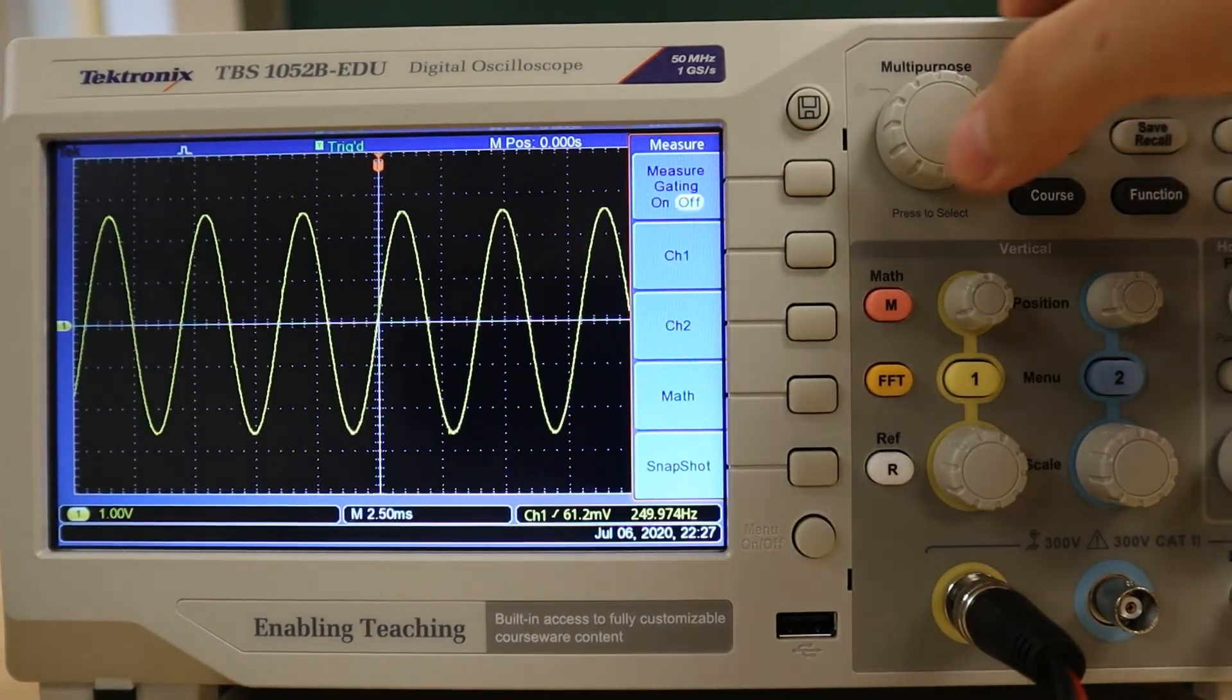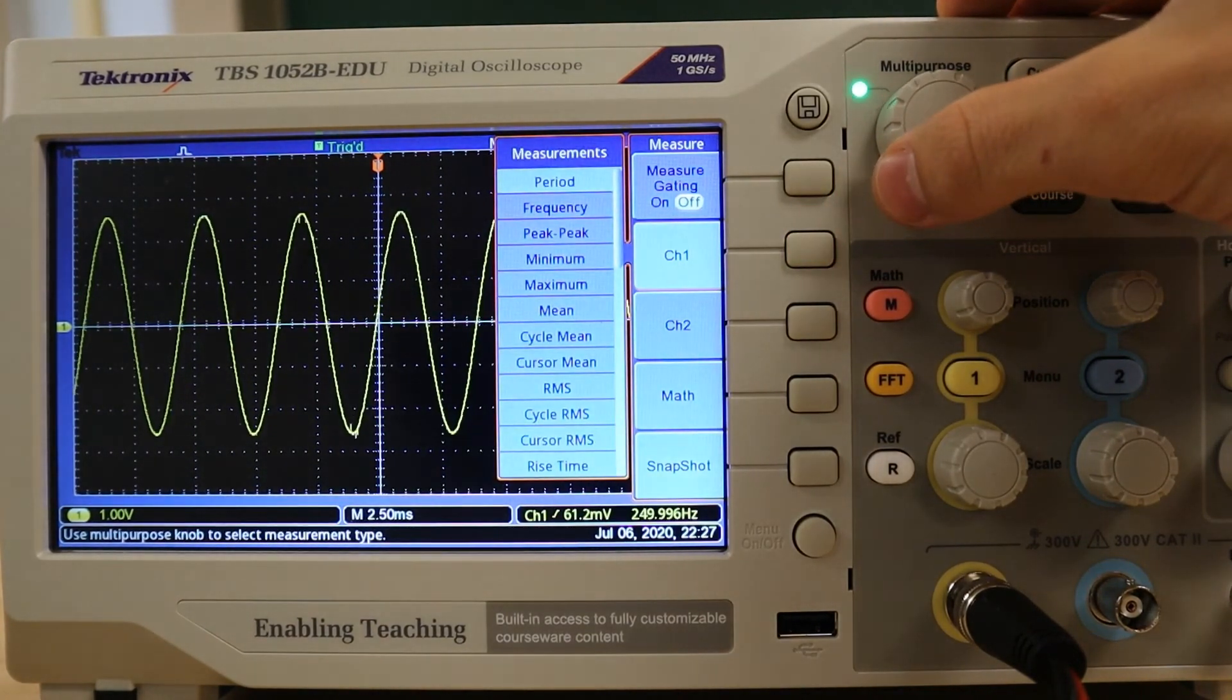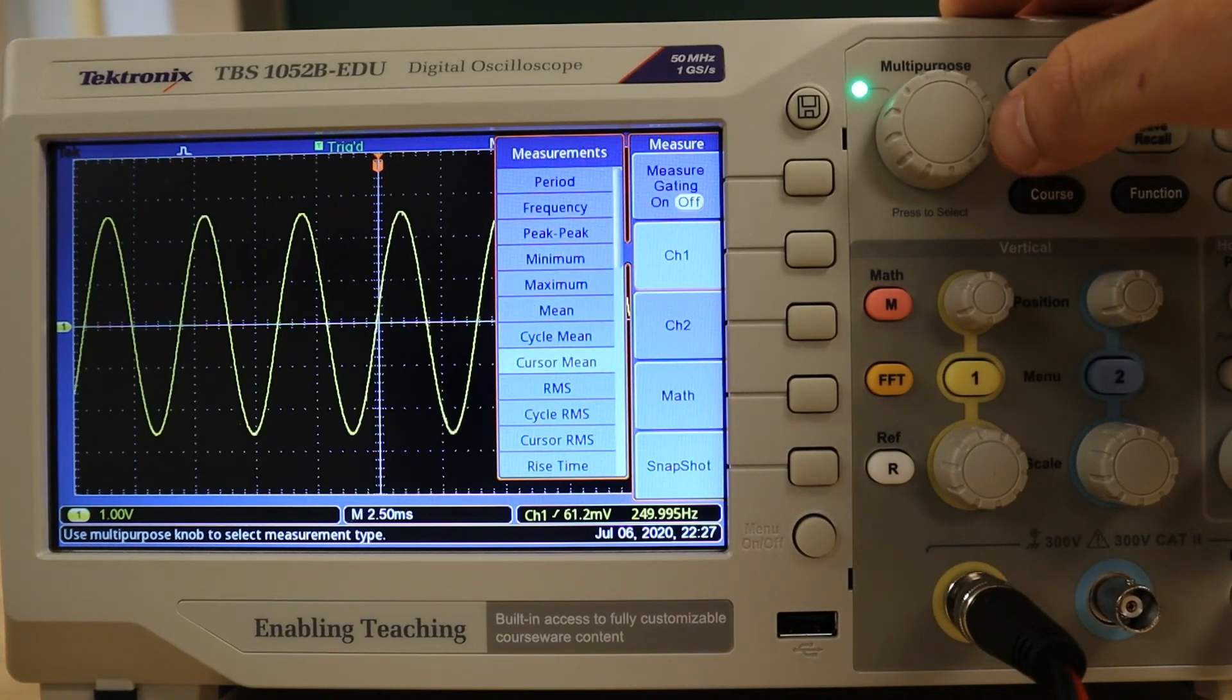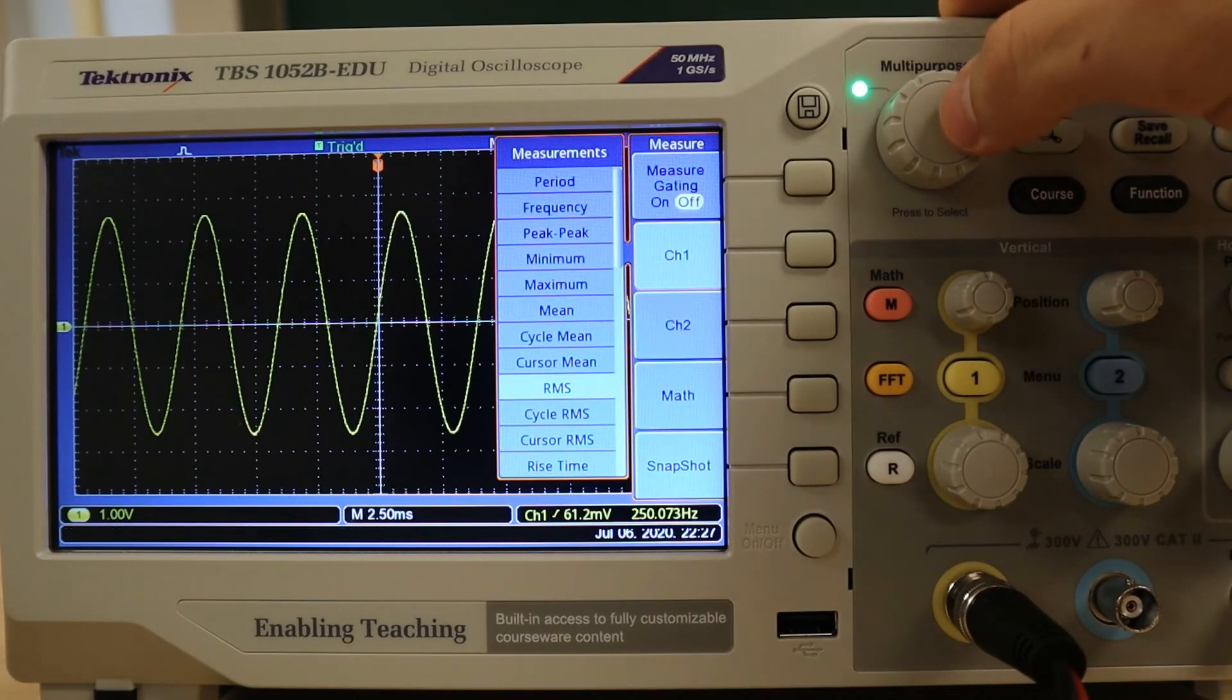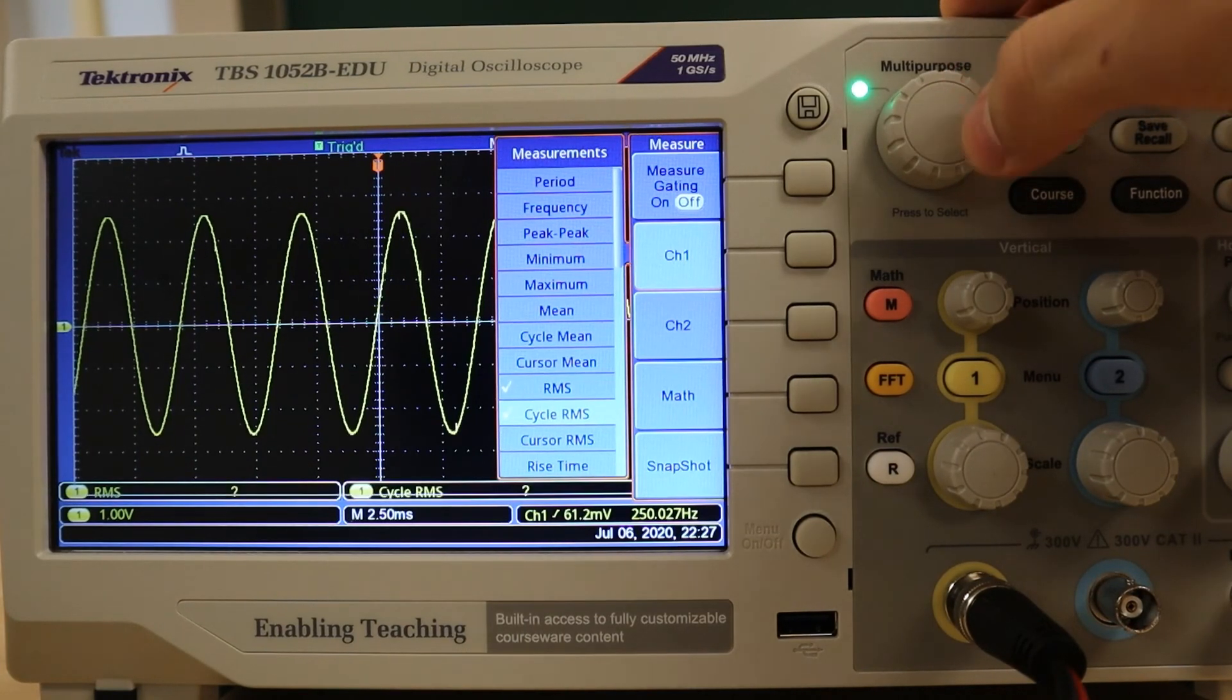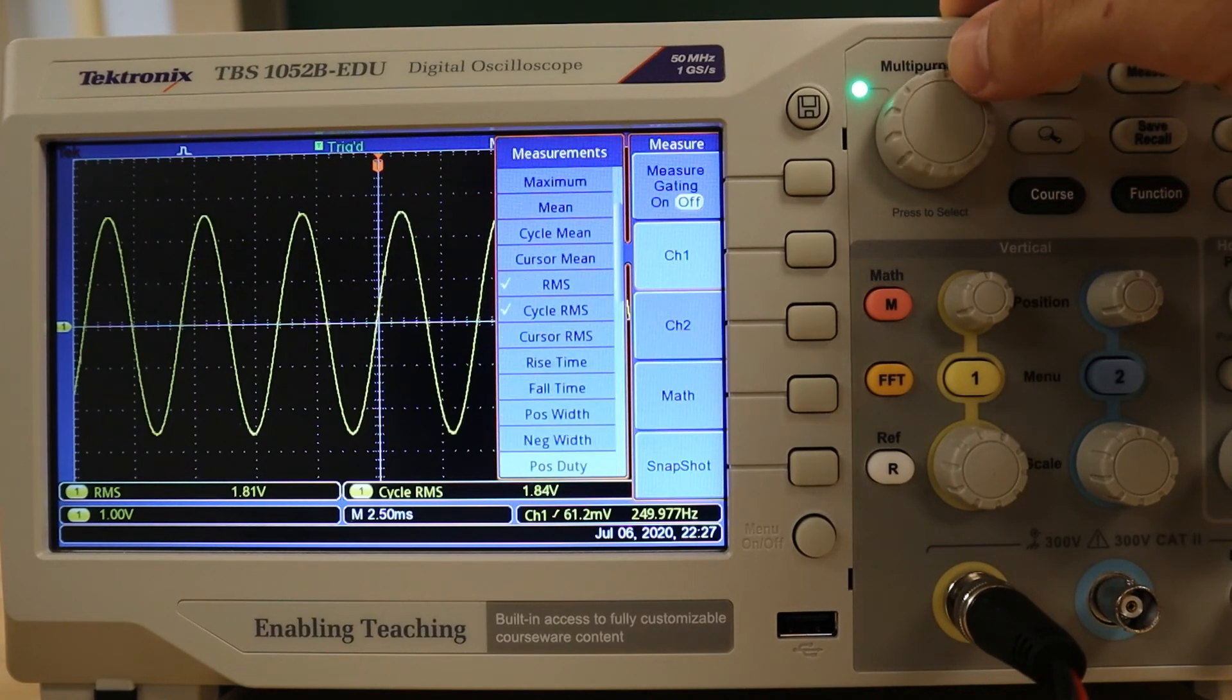These forms of automated calculations are typically stored under some kind of measuring menu. In this case, there is a large selection of automated measuring options, which include the RMS voltage, as well as the waveform's period, peak-to-peak voltage, and many others. For this particular oscilloscope, once these options are selected using the multipurpose control knob, the oscilloscope will display the calculated readings at the bottom of the screen.